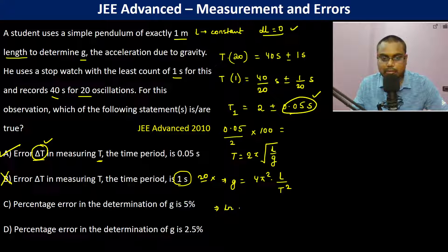Now we take natural log on both sides. ln(g) equals ln(4π²) plus ln(L), minus 2 ln(T).